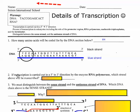Now look at question two: if transcription is only carried out in a five prime to three prime direction, which strand above will be transcribed? See if you can pause the video and figure that one out. The hint is, when we say carried out in a five prime to three prime direction, that means the mRNA molecule can only be built starting on the five prime end and then ending on the three prime end — it can only be built in that particular direction.